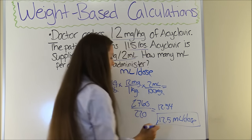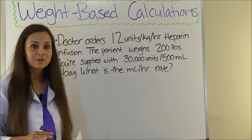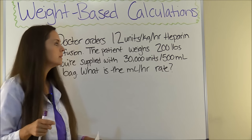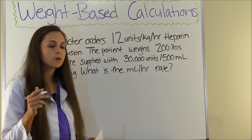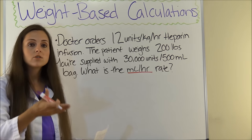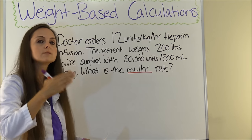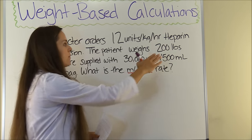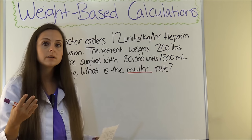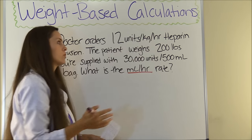This problem says: doctor orders 12 units per kilogram per hour of a heparin infusion. The patient weighs 200 pounds. You're supplied with a 30,000 unit per 500 milliliter bag. What is the milliliters per hour rate that you will set this infusion to? We know it's a weight-based calculation because for every kilogram that patient weighs, we're going to give them 12 units per hour of heparin. They weigh 200 pounds, so we'll need to convert to kilograms and then work out the infusion rate based on the bag supplied.